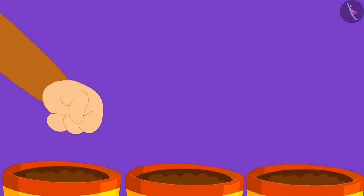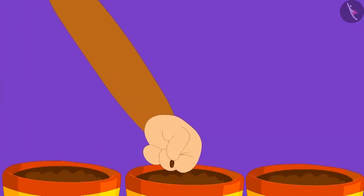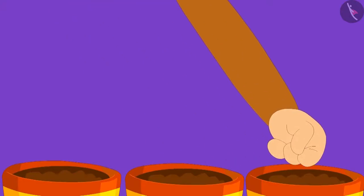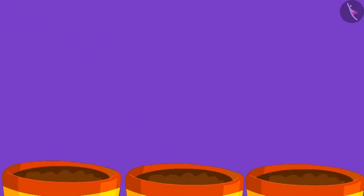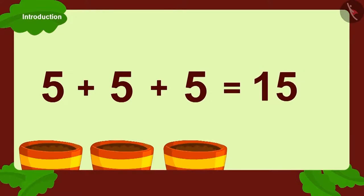Babban planted five seeds each in three pots. Can you tell how many seeds did Babban plant in total? Five plus five plus five. Babban planted fifteen seeds in total.